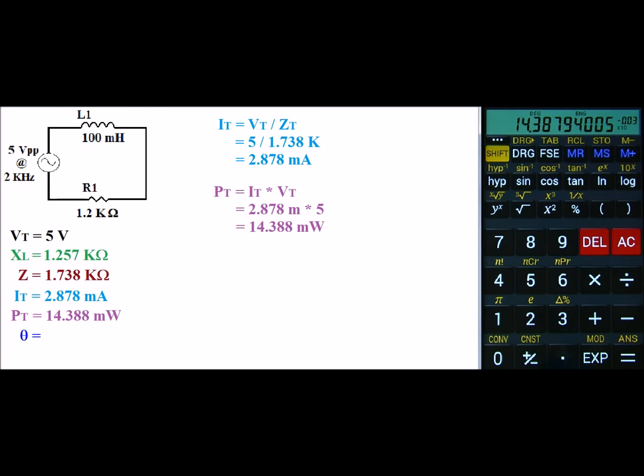The last thing on the list is our phase shift. Our phase shift is defined as the inverse tangent of X of L divided by R. So in this case, it's 1.257k divided by 2k.